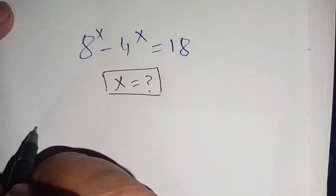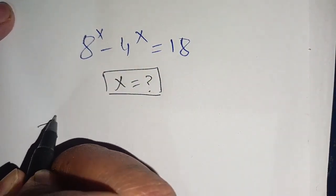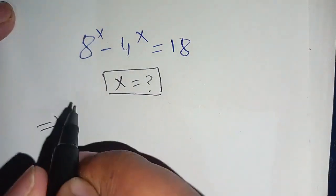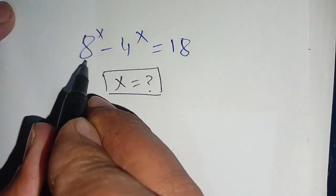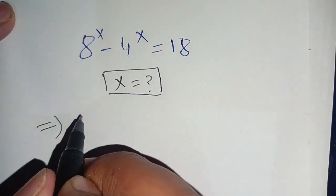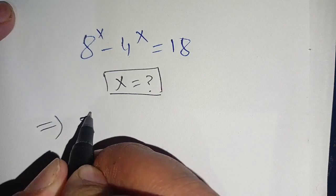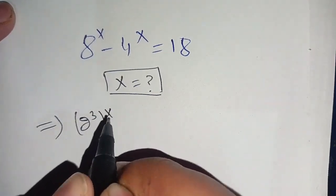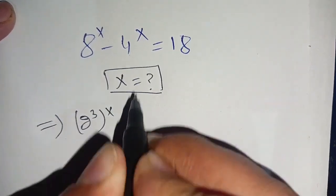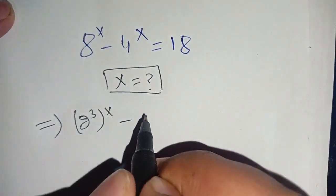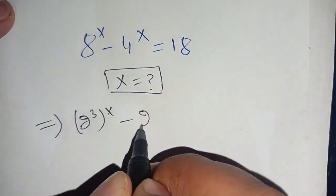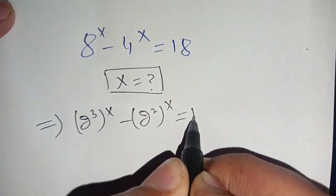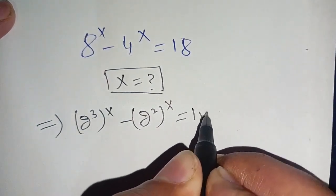We can write it as 8 to the power x. 8 can be broken down in terms of 2; we can write it as (2 to the power 3) to the power x, minus 4, which can be written as (2 to the power 2) to the power x, is equal to 18.